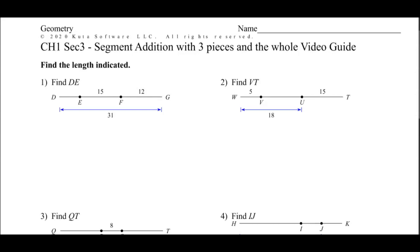In this first one, what we recognize is we have three pieces. We have segment DE, and the segments added together — DE plus EF plus FG — have to equal the entire segment, which is DG. Once we recognize that, we can substitute in the things that we do or don't know.